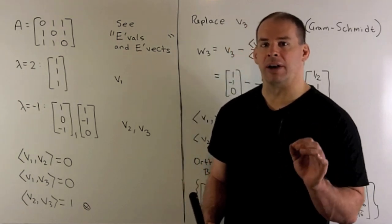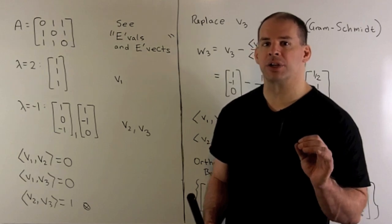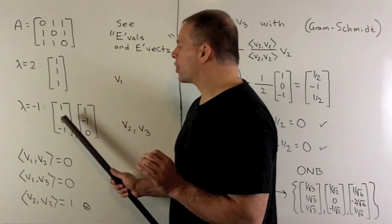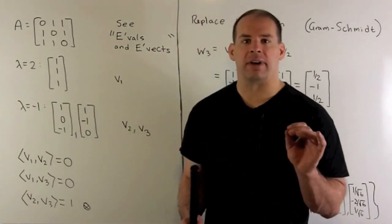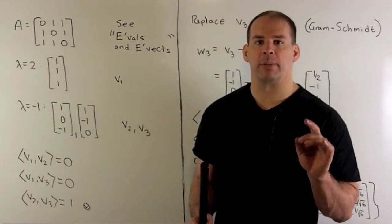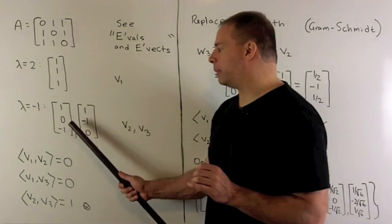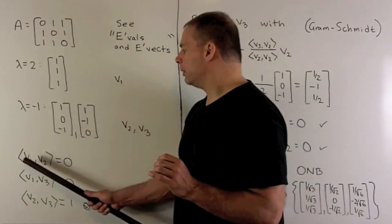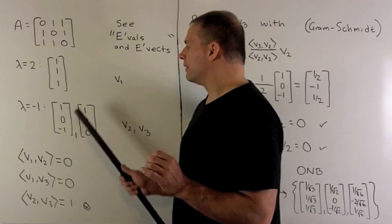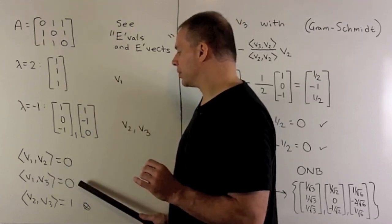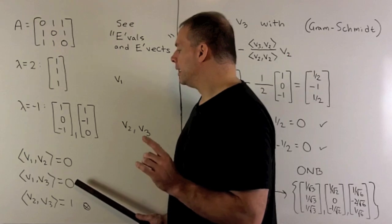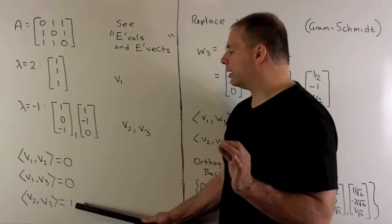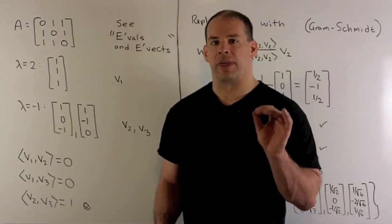We want to show that we can find an orthonormal basis of eigenvectors. For eigenvectors corresponding to different eigenvalues, if you have a symmetric matrix, these are automatically going to be orthogonal. Let's check that. If I take V1 against V2, I get 0. If I take V1 against V3, we also get 0. If we take V2 against V3, I'm going to get 1. So our basis isn't orthogonal.